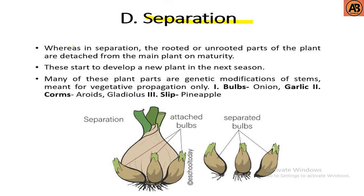Next is separation, another type of asexual propagation. In separation, the rooted or unrooted parts of the plant are detached from the main plant on maturity, and these start to develop into a new plant in the next season. Many of these plant parts are genetic modifications of the stems meant for vegetative propagation only.